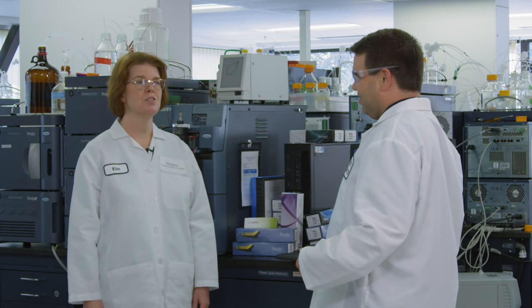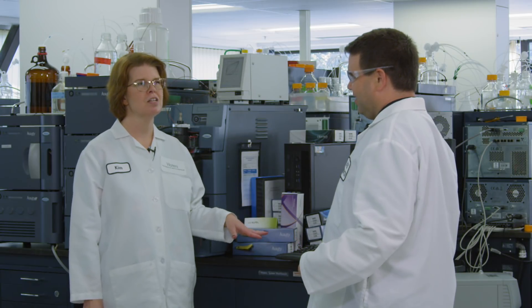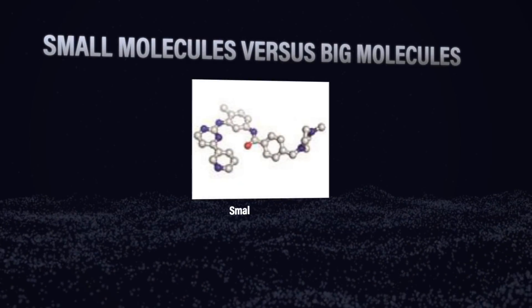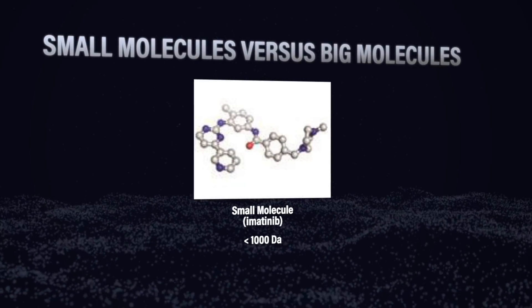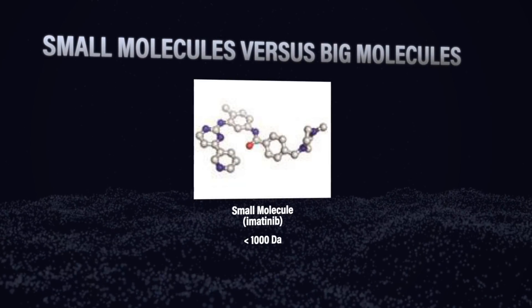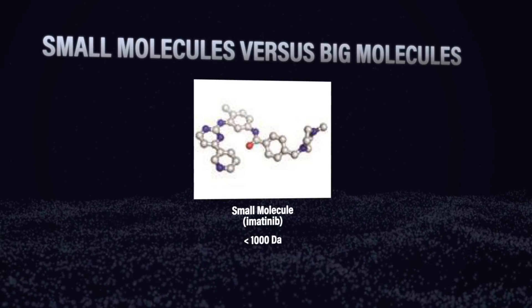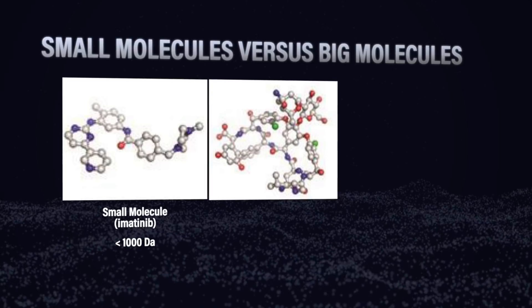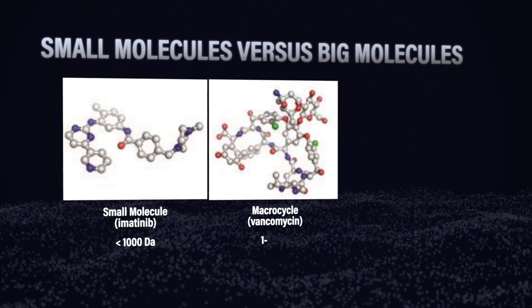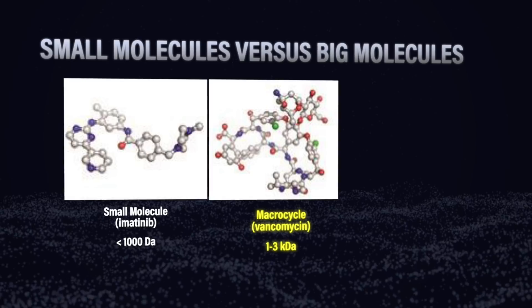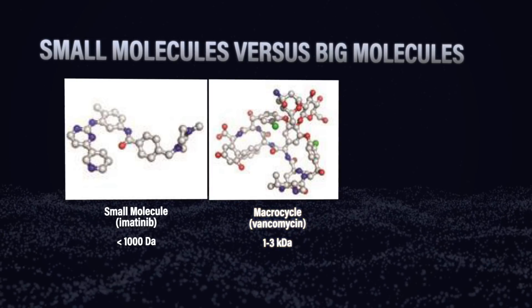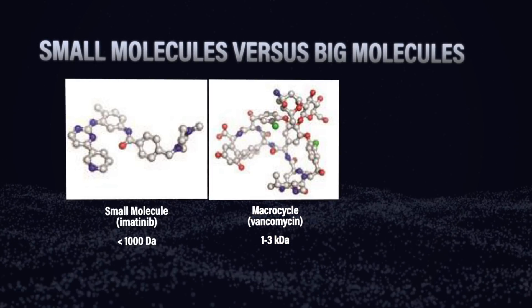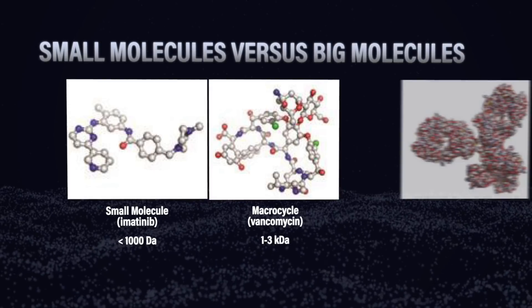What's the biggest difference between small molecules and large molecules? There are a lot of differences, but let me give you an idea to start. If you think about a small molecule, they're actually pretty much what it sounds like — they're small molecules, generally under a thousand molecular weight. When we start thinking about things like peptides, they're starting to get a little bit bigger, generally around one to four thousand molecular weight in a regular-sized peptide range.